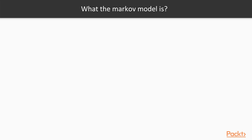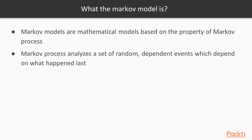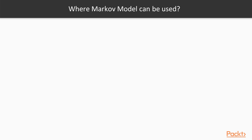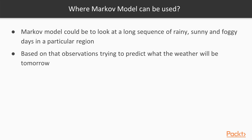So what is the Markov model? Markov models are mathematical models based on the property of a Markov process. A Markov process analyzes a set of random dependent events which depend on what happened last. Markov models could be used to look at a long sequence of rainy, sunny, and foggy days in a particular region, and based on those observations, try to predict what the weather will be tomorrow.